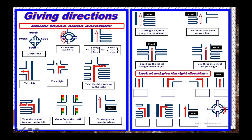Ada turn left — kalian pasti paham tentang ini — turn right juga, jangan lupa bedanya dengan go tadi. Lalu ada take the turning on the right, kemudian take the second turning on the left, dan boleh juga pakai take the second block on the left. Lanjut, ada go as far as the traffic light, kamu terus aja melewati lampu-lampu ini. Selanjutnya ada go straight on pass — artinya kamu lurus aja saat melewati sebuah sekolah.